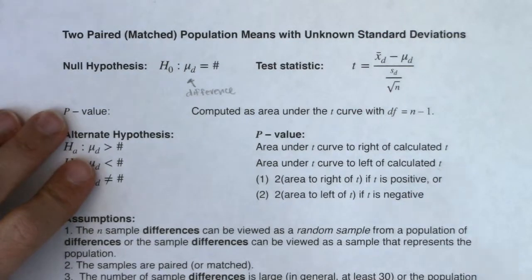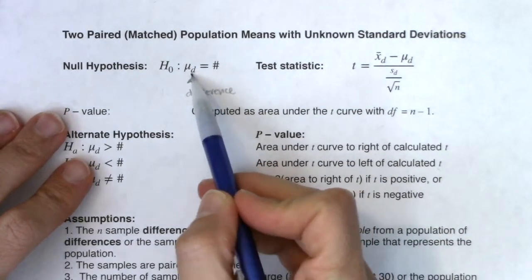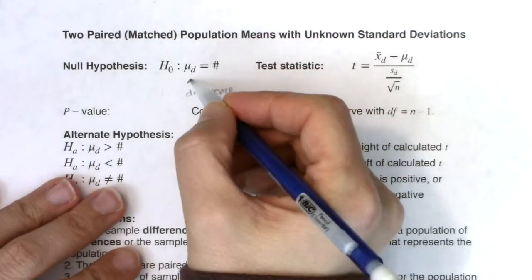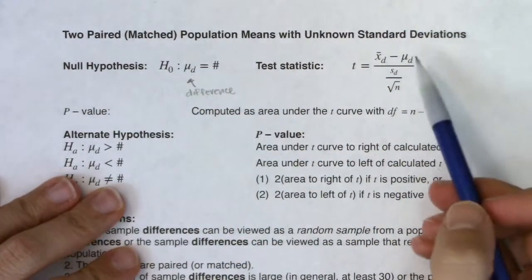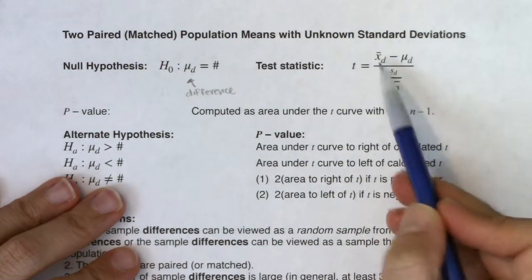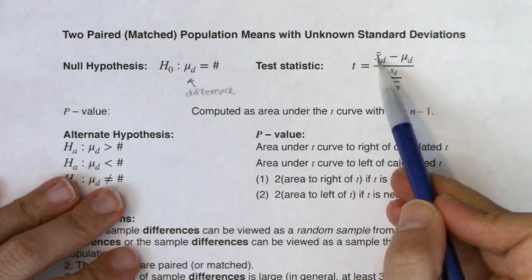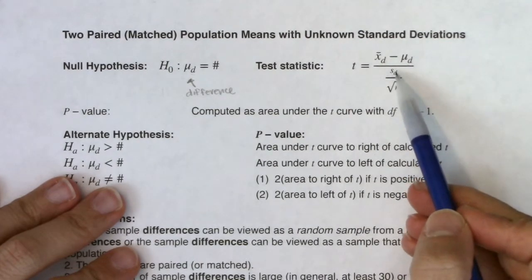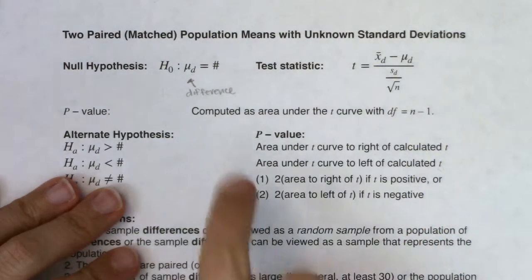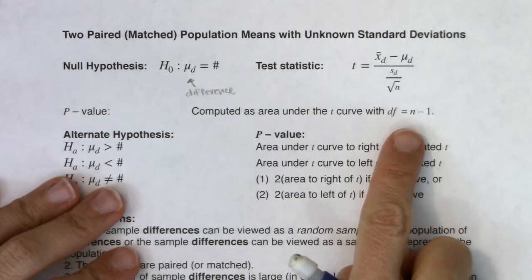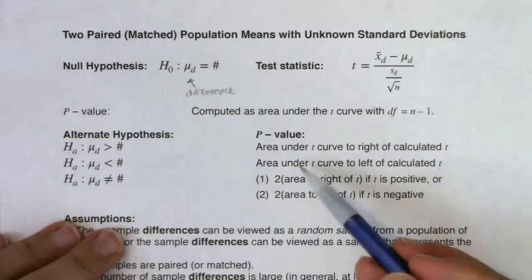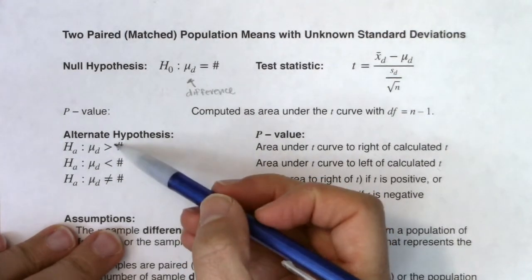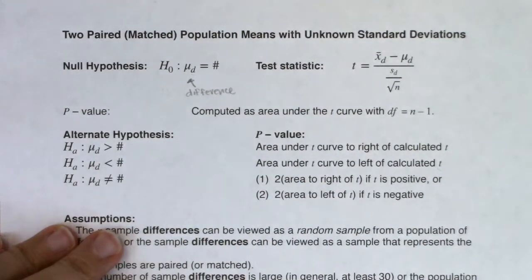The subscript d is our way of notating that we're looking at paired tests. When everyone in stats sees this subscript they know: paired means, paired data. So we have mu sub d equaling a number. Our test statistic also has all the subscripts of d — x-bar sub d minus mu sub d over s sub d divided by square root of n. Degrees of freedom goes back to n minus 1 — not that ugly formula anymore. We get p-values the same way with tcdf, and we can have right-tailed, left-tailed, or two-tailed alternates.